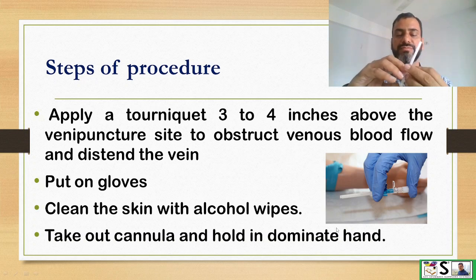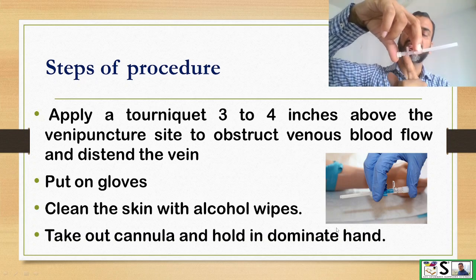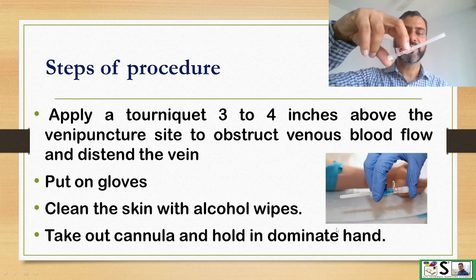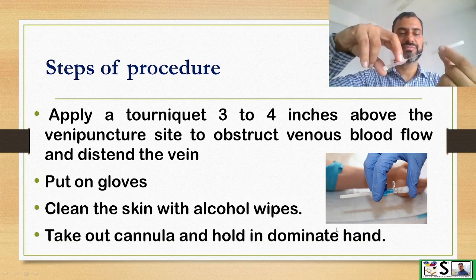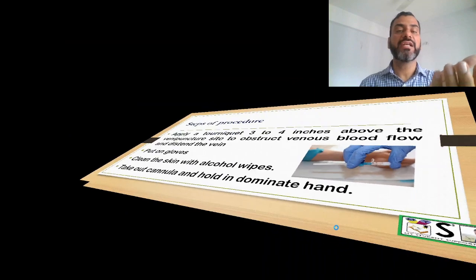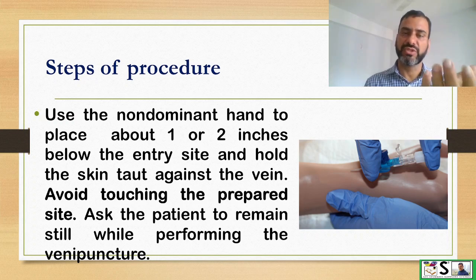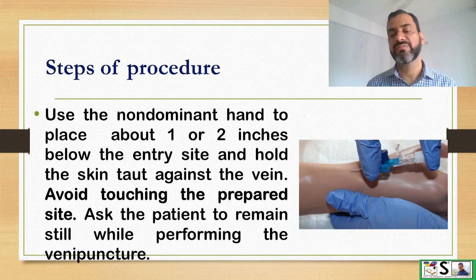Hold the cannula properly so that your thumb presses here to prevent the needle from going back. Just before piercing, remove the cap. Your non-dominant hand will hold the patient's arm below and taut the skin so that the vein is stabilized. Avoid touching the prepared site because that should remain sterile. Ask the client to remain still while performing the venipuncture.